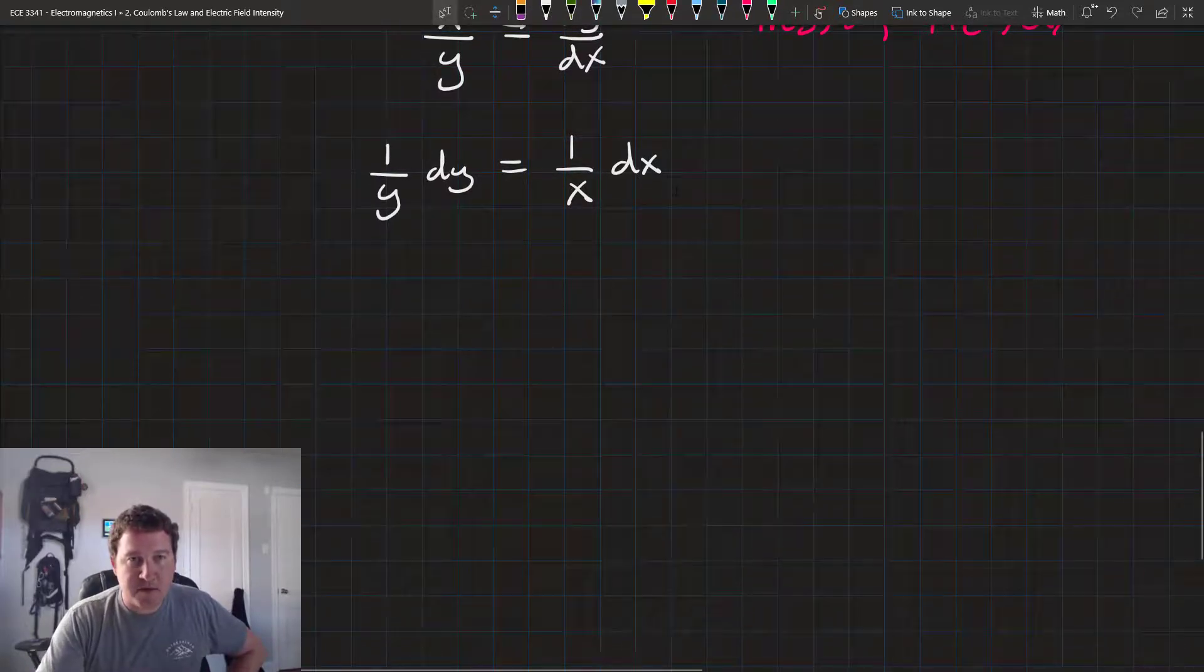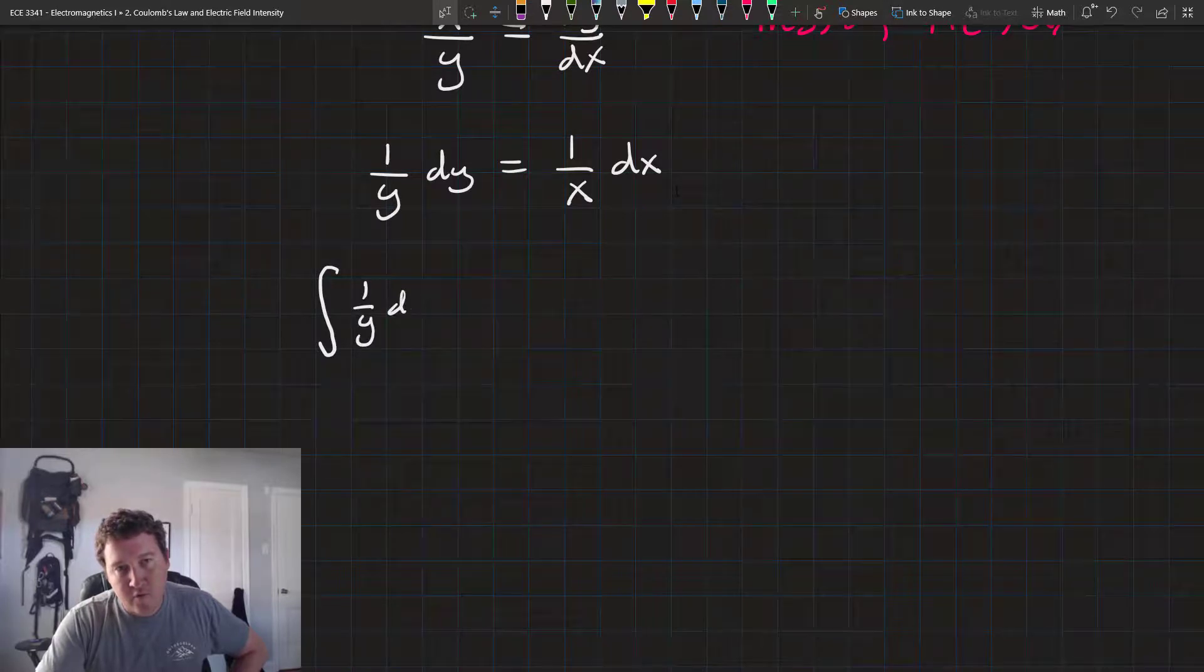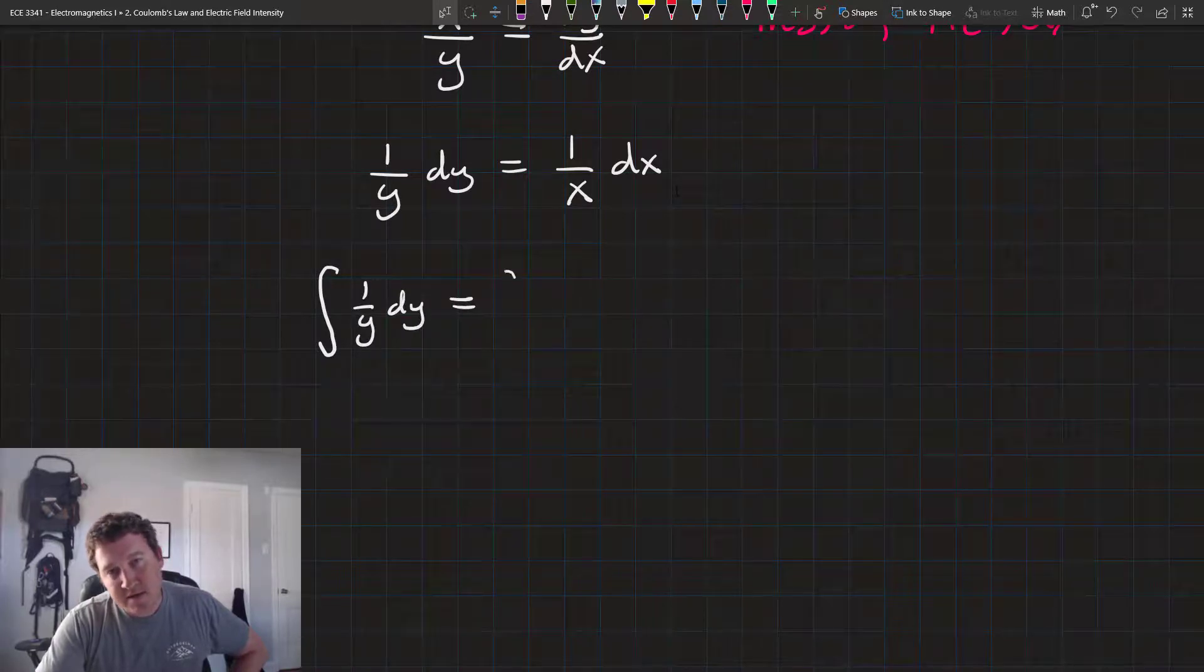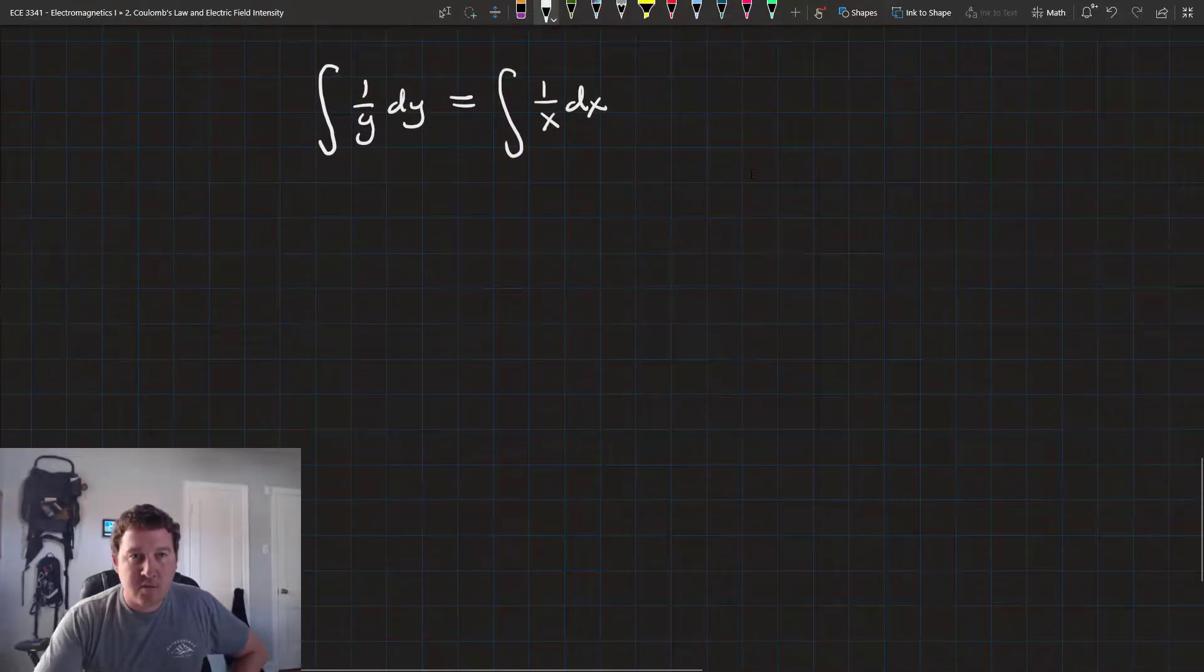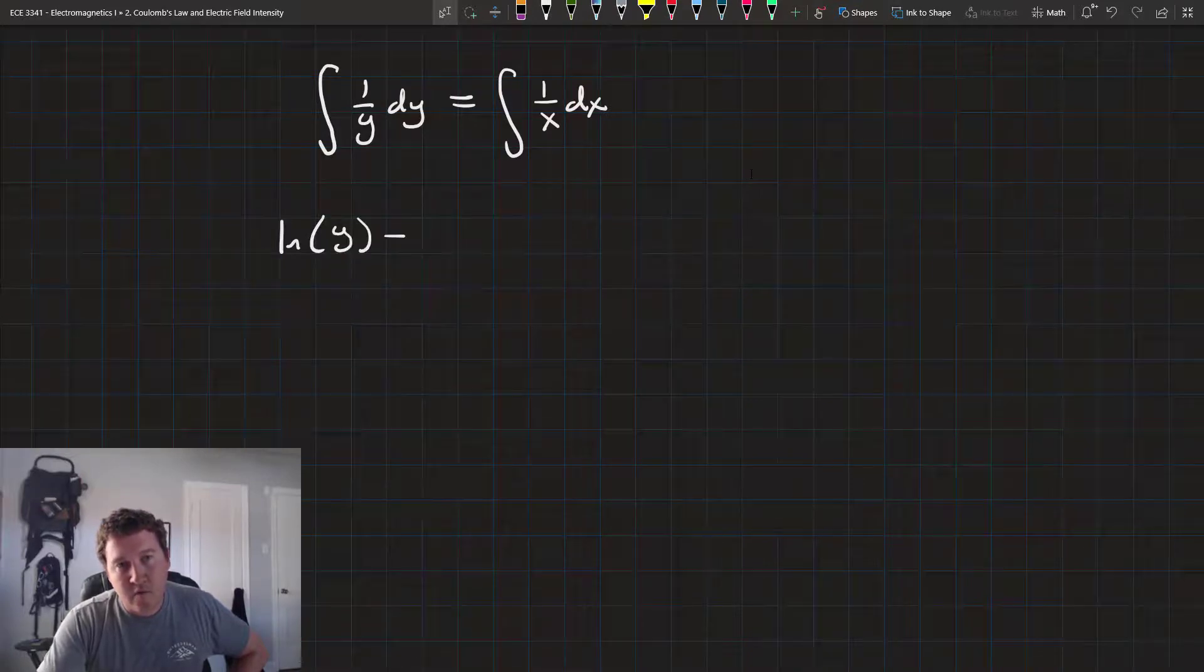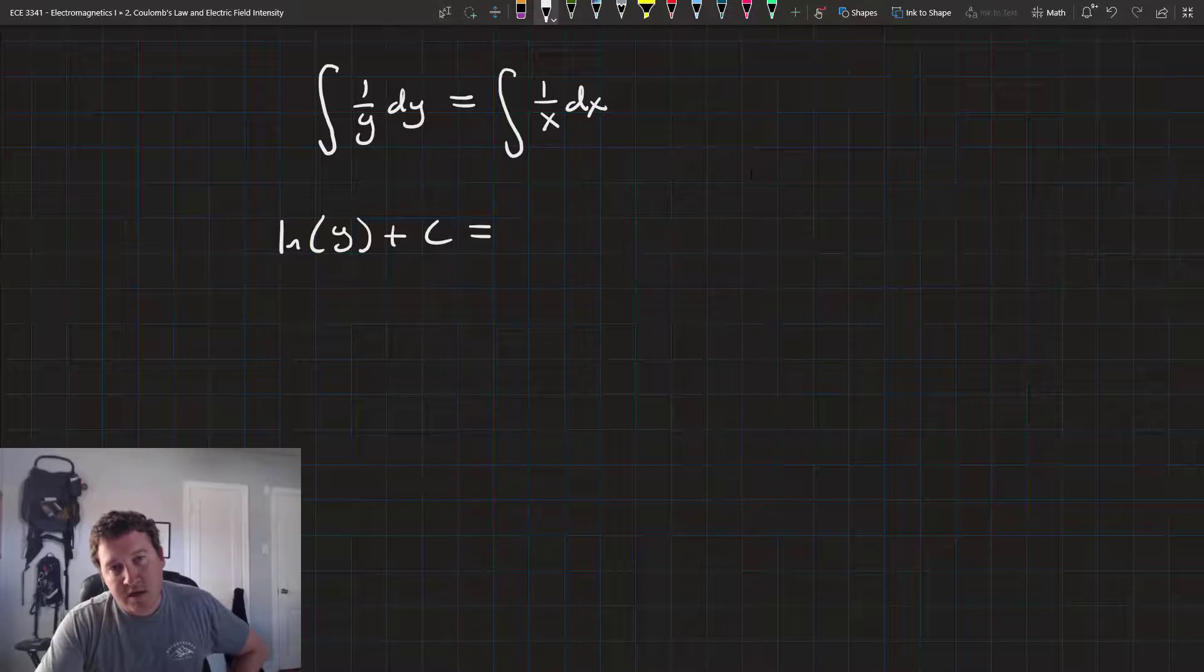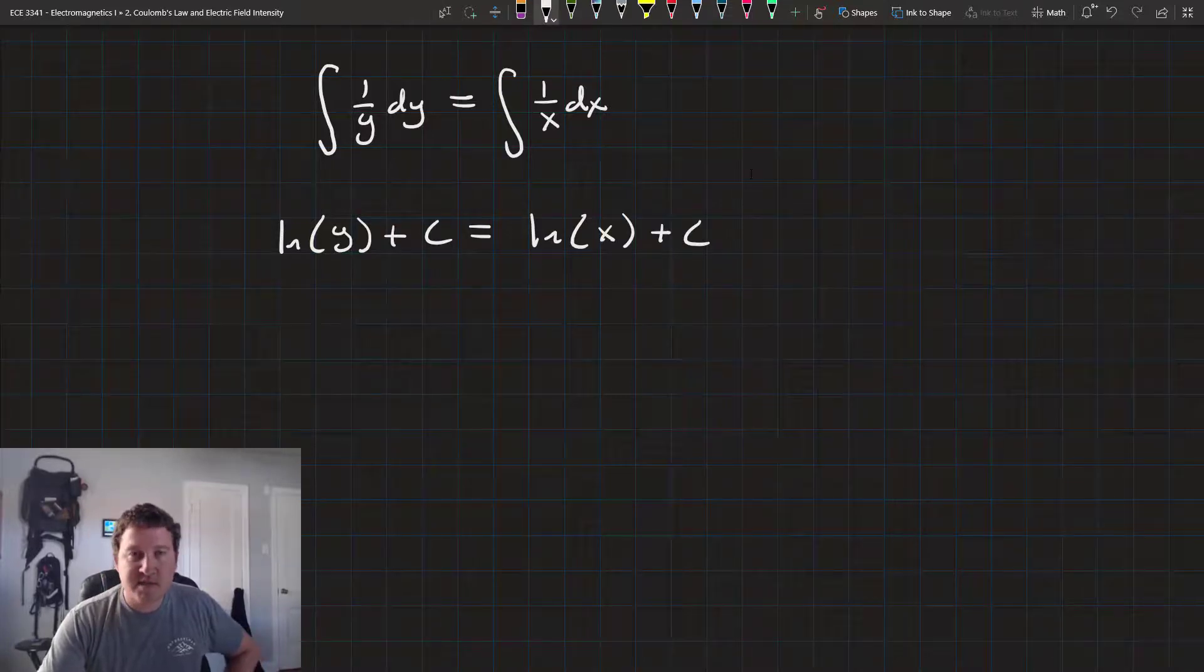The next step is to integrate both sides. So, we'll take the integral of 1 over y dy equals the integral of 1 over x dx. And we'll get that that's equal to the natural log of y plus c equals the natural log of x, also plus c.